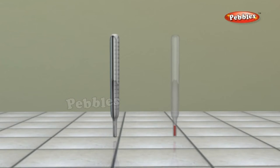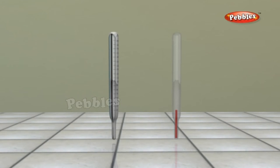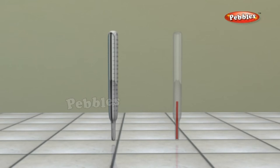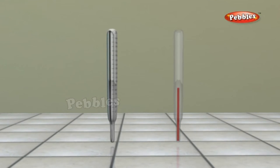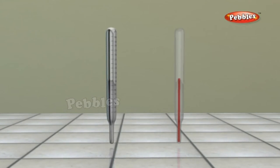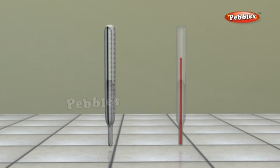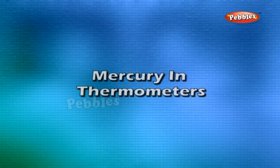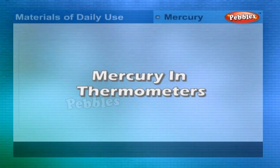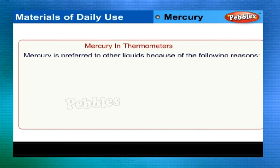Thermometers: a thermometer is an instrument that measures temperature. Its action is based on physically measurable properties of substances that change when temperature changes. There are different types of thermometers; alcohol and mercury are generally used in making thermometers.